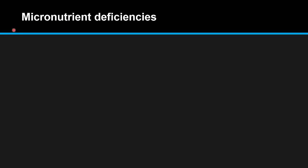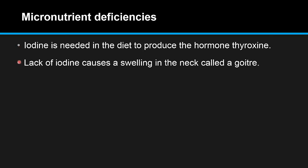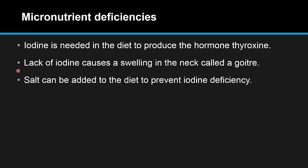Micronutrient Deficiencies. Iodine is needed in the diet to produce the hormone thyroxine. Lack of iodine causes a swelling in the neck called a goiter. Salt can be added to the diet to prevent iodine deficiency.